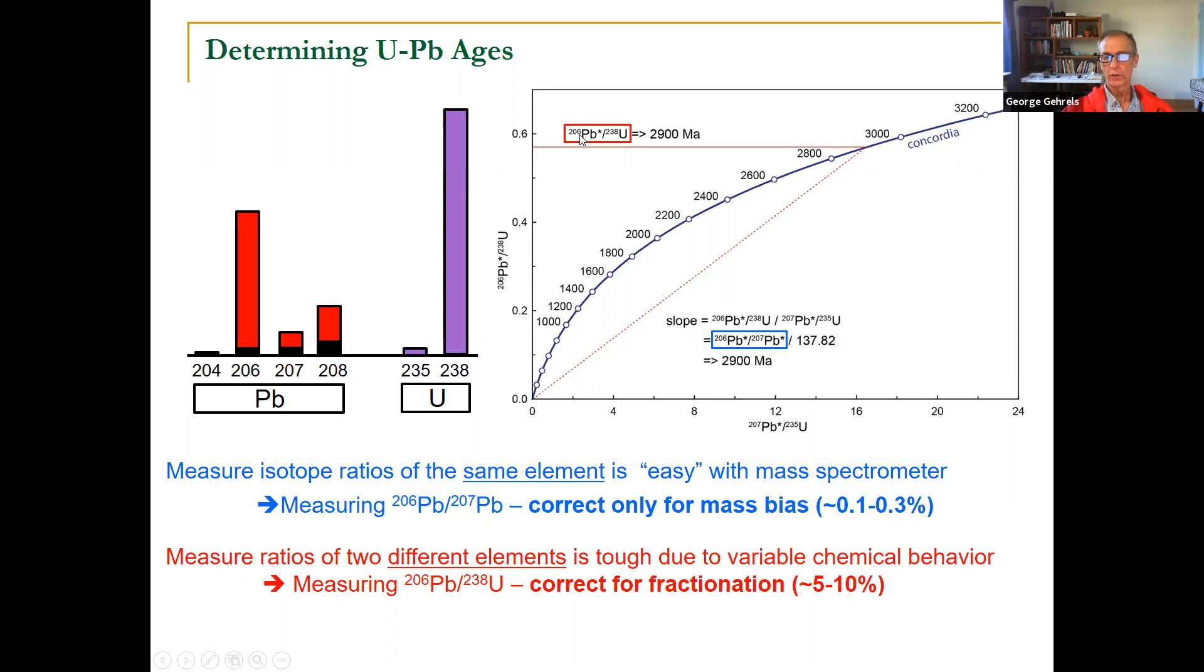The bad news is that 206 lead and 238 uranium actually behave very differently in a mass spectrometer as the laser is pulsing down onto the sample surface, as that material is coming out, as it goes through the torch into the analyzer. 206 behaves very differently from 238. Very different size, very different charge. And so you actually get significant fractionation of 206 to 238.